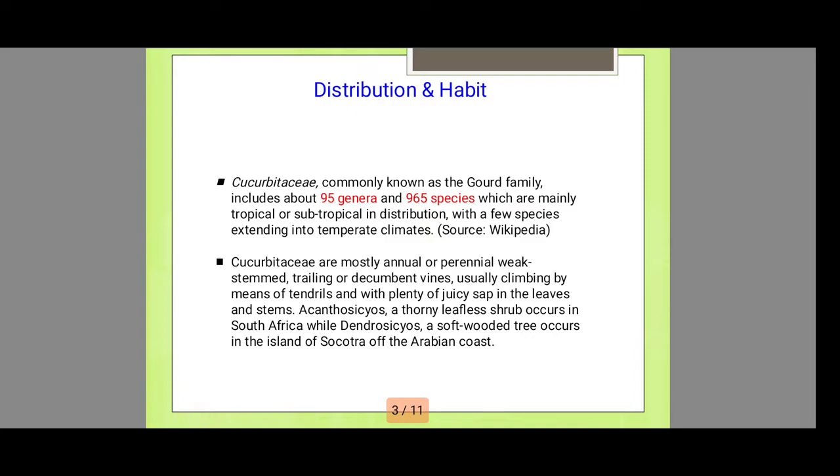Cucurbitaceae are mostly annual or perennial, weak-stemmed, trailing or decumbent vines, usually climbing by means of tendrils and with plenty of juicy sap in the leaves and stems. A canthocyclos, a thorny leafless shrub, occurs in the island of Socotra off the Arabian coast.